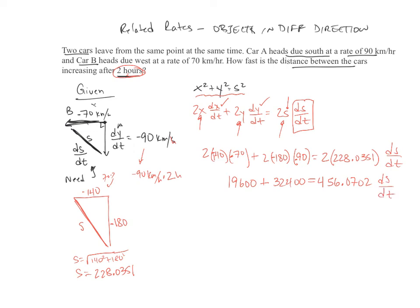And solving this, we'll end up with 114.0175 kilometers per hour, which is our DS/DT. Again, the units here were kilometers, kilometers per hour. Kilometers, kilometers per hour, and these were kilometers, so you ended up with kilometers per hour.